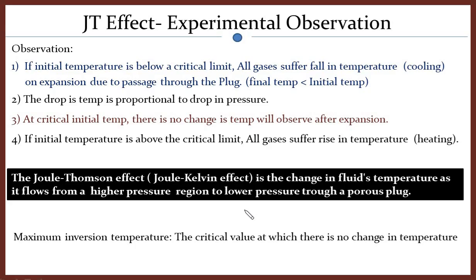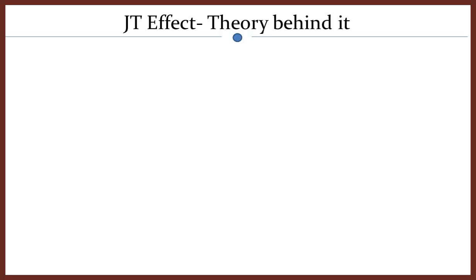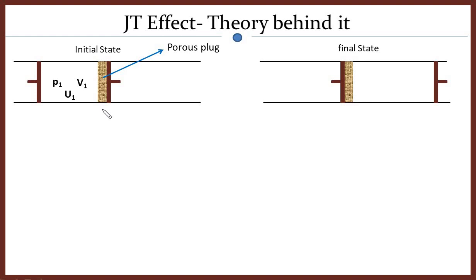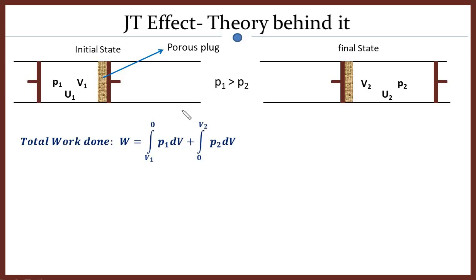Let's see the theory behind the Joule-Thompson effect. In the simplified schematic diagram, the gas initially fills compartment 1 with pressure P1, volume V1, and internal energy U1. This is the initial state; after passing through the porous plug the gas reaches the final state with pressure P2, volume V2, and internal energy U2, where P1 is greater than P2. We need to calculate the total work done during this process. Work done is pressure into change in volume.